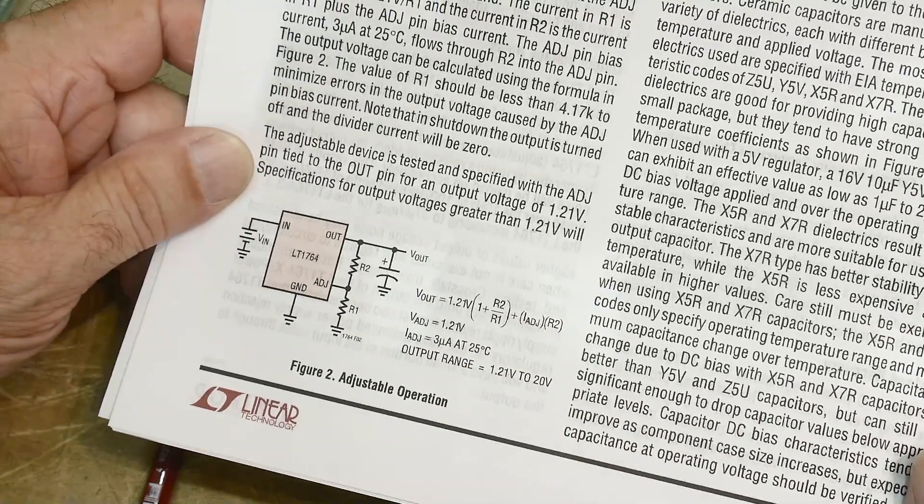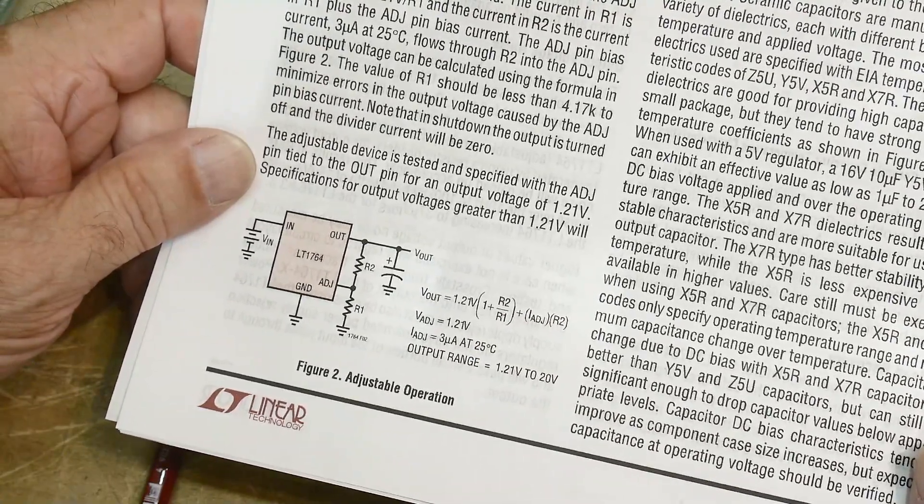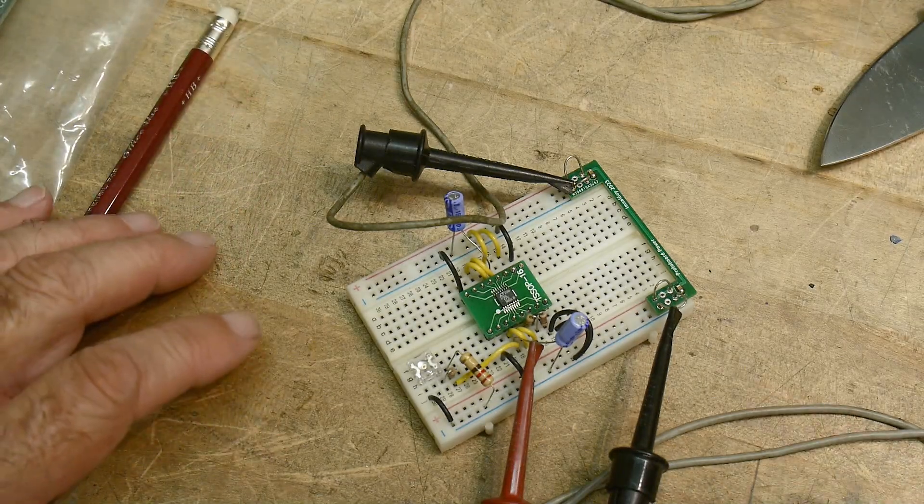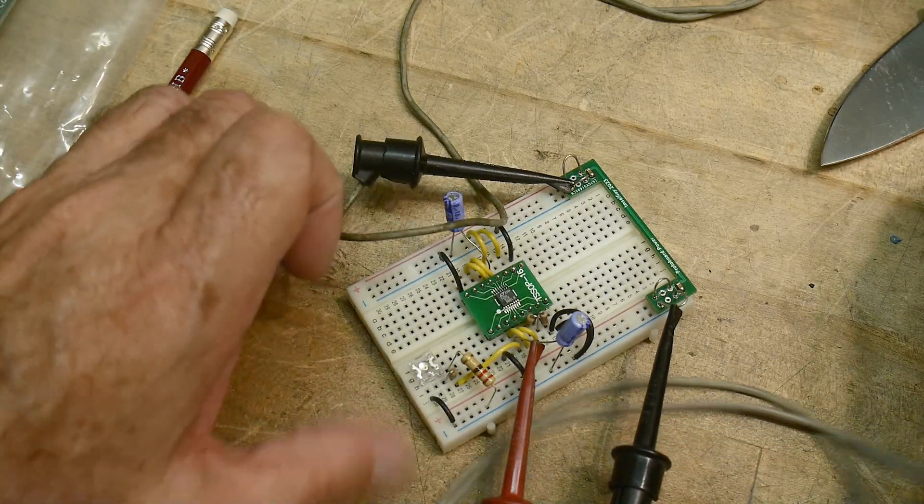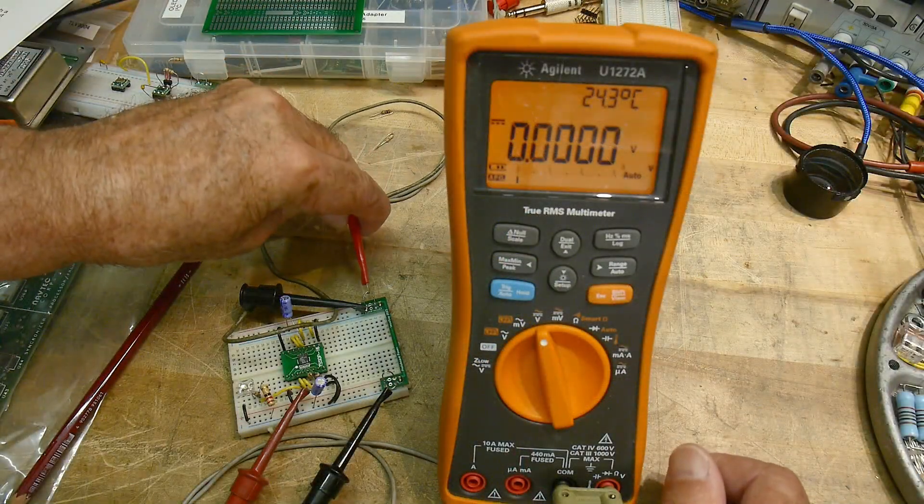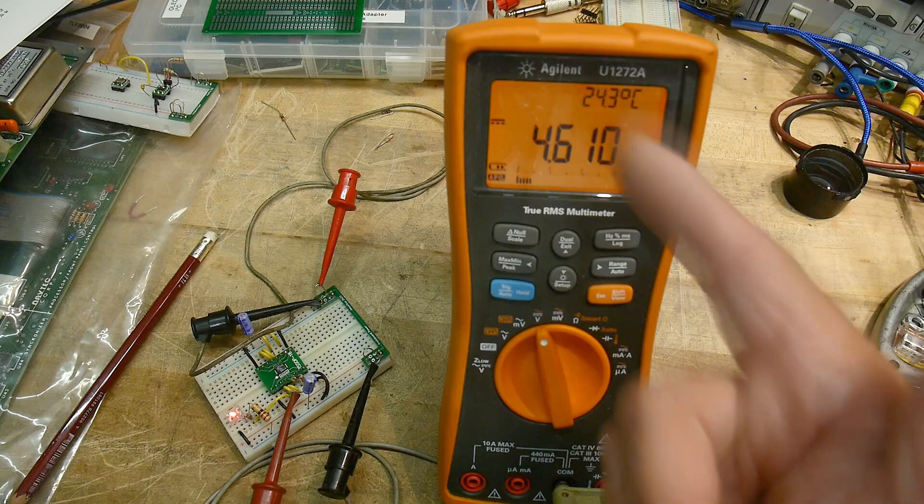But we don't care today, so let's go ahead and hook this thing up and see what kind of voltage we get out. Alright, let's put some voltage on the input. And our resistive string is giving us 4.61V, and I'm inputting 7.5 volts.